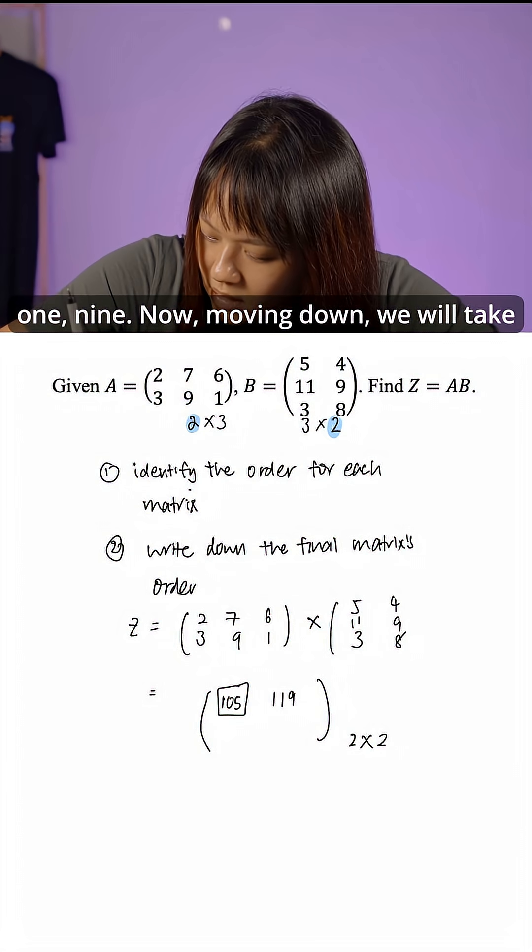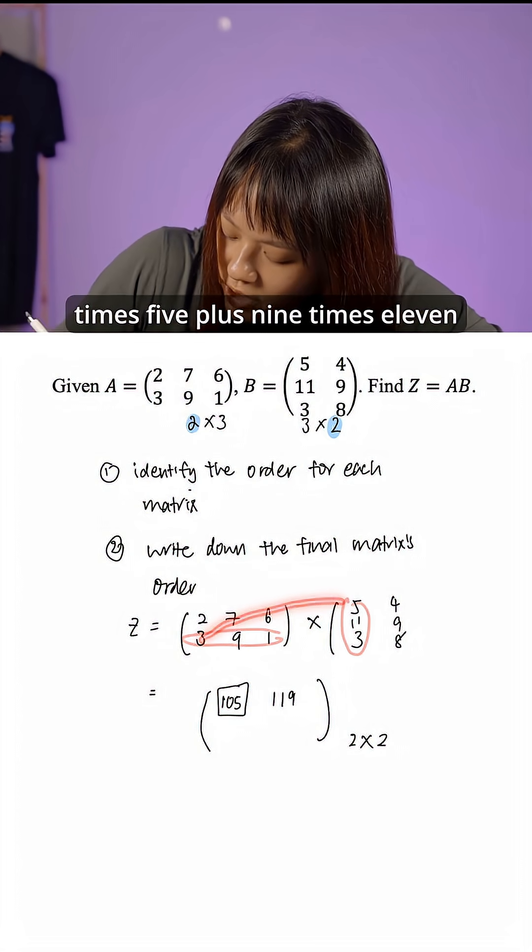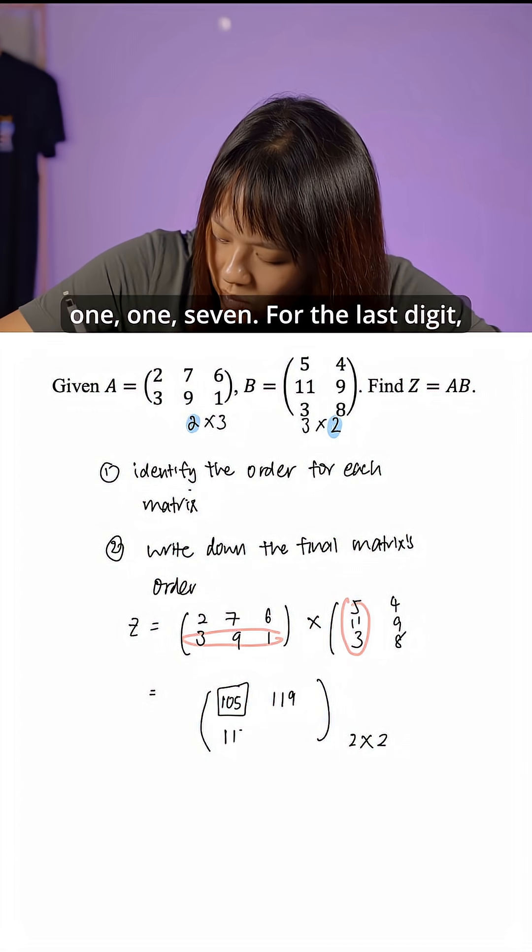Now moving down, we will take this multiply by this. So we'll do the same method: 3 times 5 plus 9 times 11 plus 1 times 3, and with that we'll get 117.